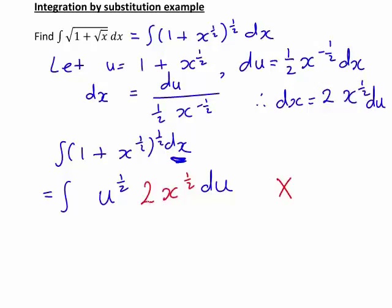And the answer is no. You'll notice I've rewritten this with 2x to the half in red here. This is not right. We cannot evaluate an integral here that's a mixture of two variables, u and x. So we must write that bit I've put in red, the 2x to the half, in terms of u in order to be able to work out this integral.